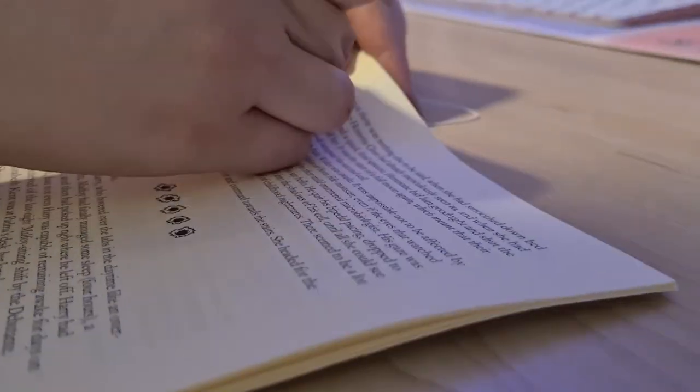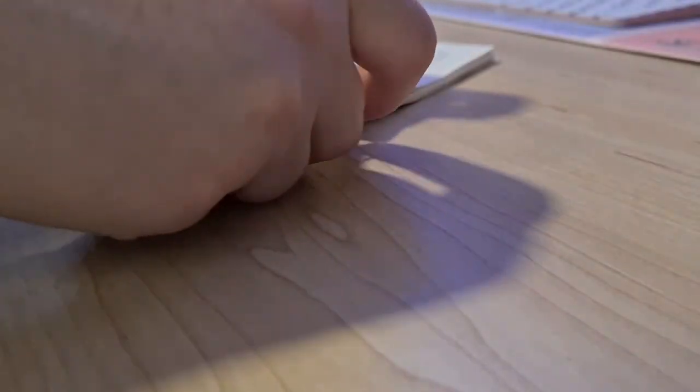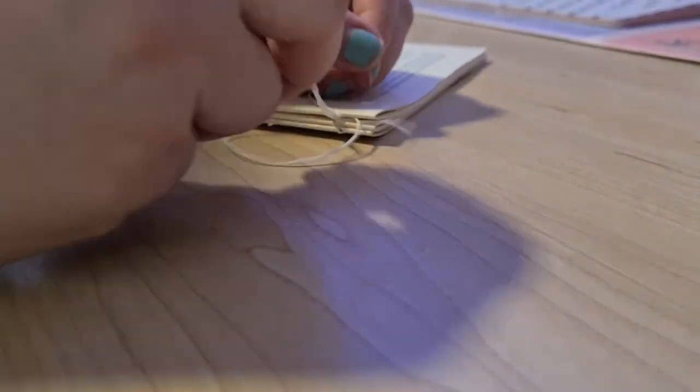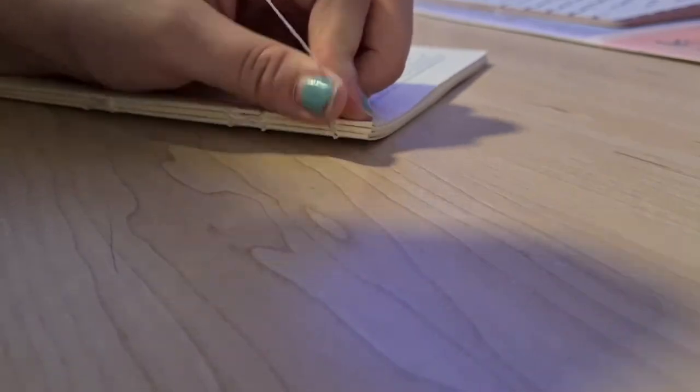I tie off by threading through the second signature and creating a double knot. You don't have to use a double knot, I personally just like to, to give it a little bit extra security.